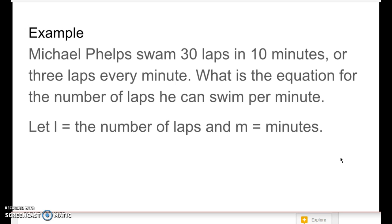We have two choices if you're not paying attention. We have two variables, l and m, and we have a constant of 3. So it's either going to be l equals 3 times m, or it's going to be m equals l times 3. Which one do you think it is? 3 laps every minute.